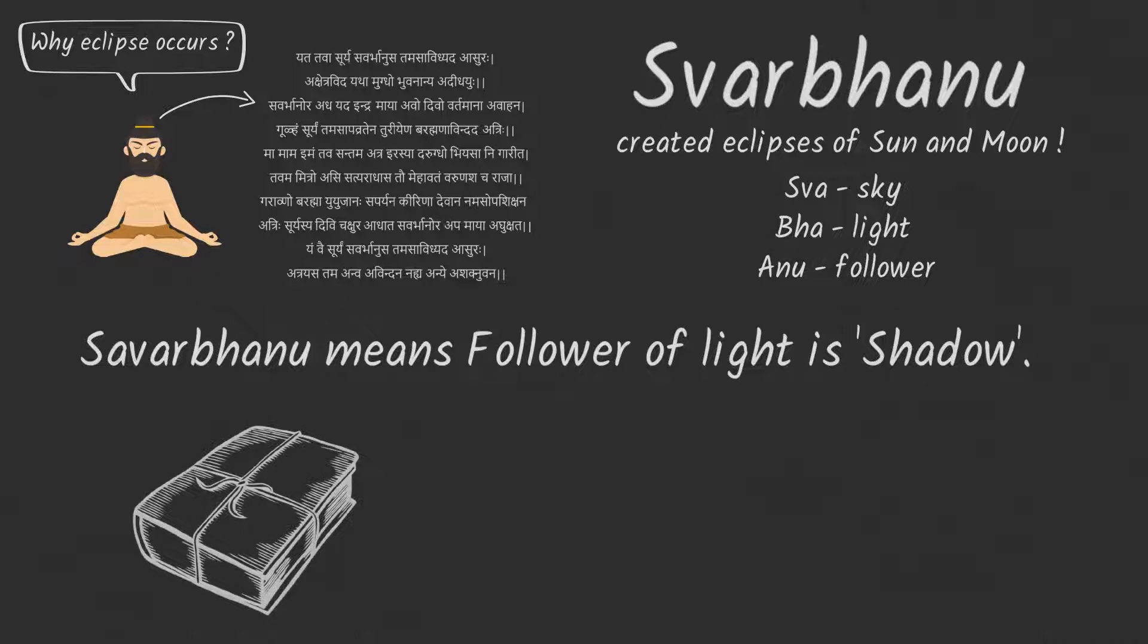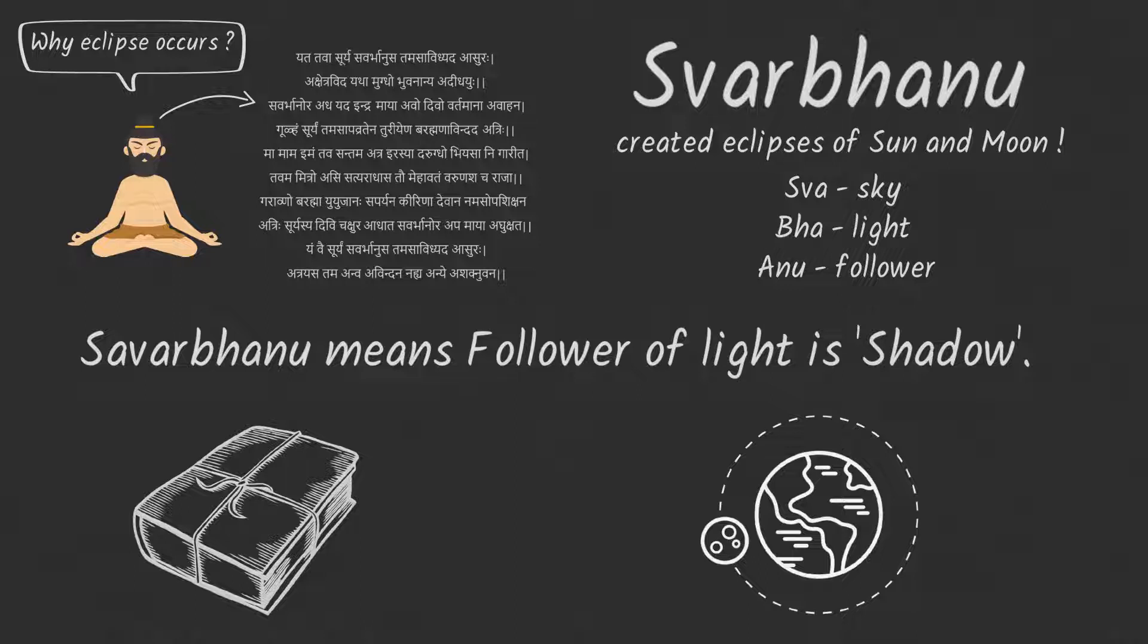Rig Veda says Swarvanu was not from the heaven but from the earth, which explained that the moon is a natural satellite of the earth and that it does not have its own brightness, but rather reflects the light of the sun.